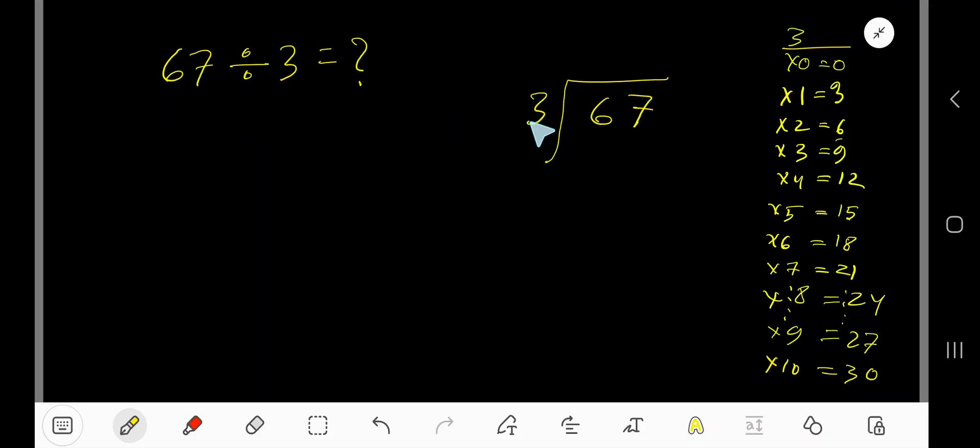67 divided by 3. Here 3 is a divisor, so we need multiplication table of 3. 3 times 0 is 0, 3 times 1 is 3, 3 times 2 is 6, 3 times 3 is 9, 3 times 4 is 12, 3 times 5 is 15.